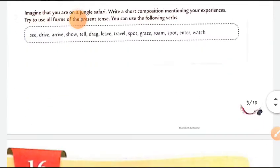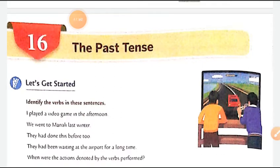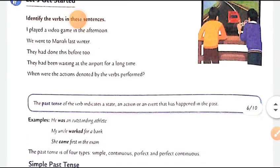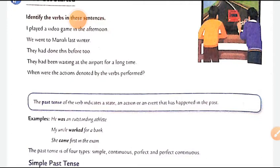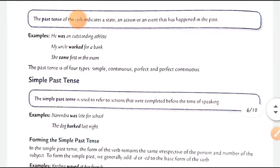Ab aata hai past tense. Maine inhe ek saath isliye liya hai taaki aapko dono ek saath samajh aa jayein. Sirf itna farak hoga ki ek present hai aur yeh past hai. Past tense un actions ke baare mein batata hai jo past mein hue hain. For example: 'He was an outstanding athlete.' 'My uncle worked for a bank' — ab nahi karte. 'She came first in the exam' — pehle aayi thi, ab nahi.